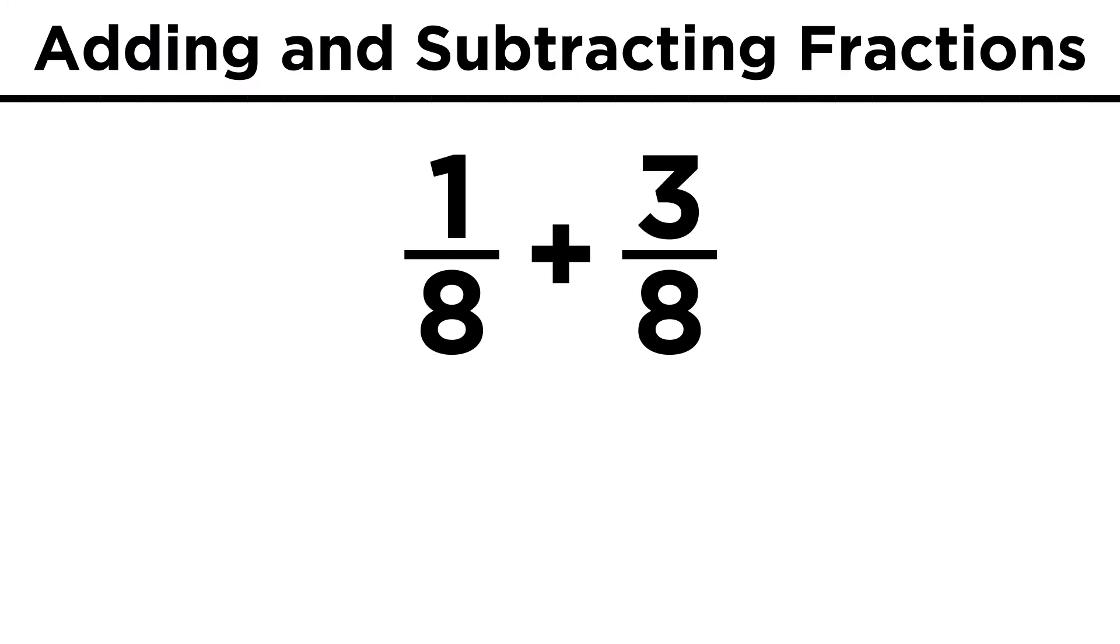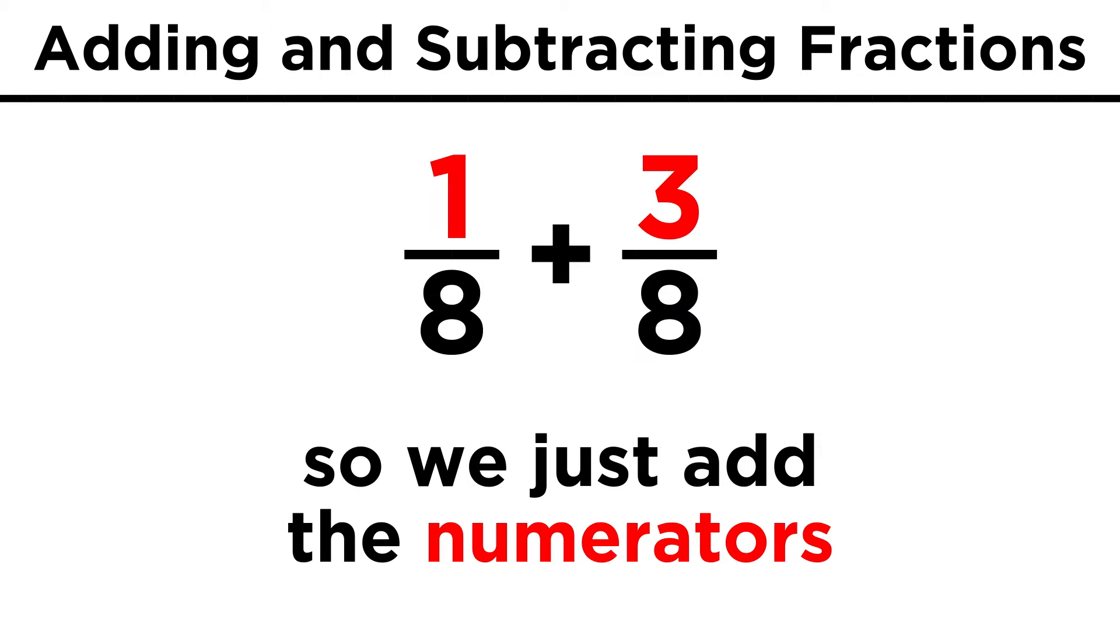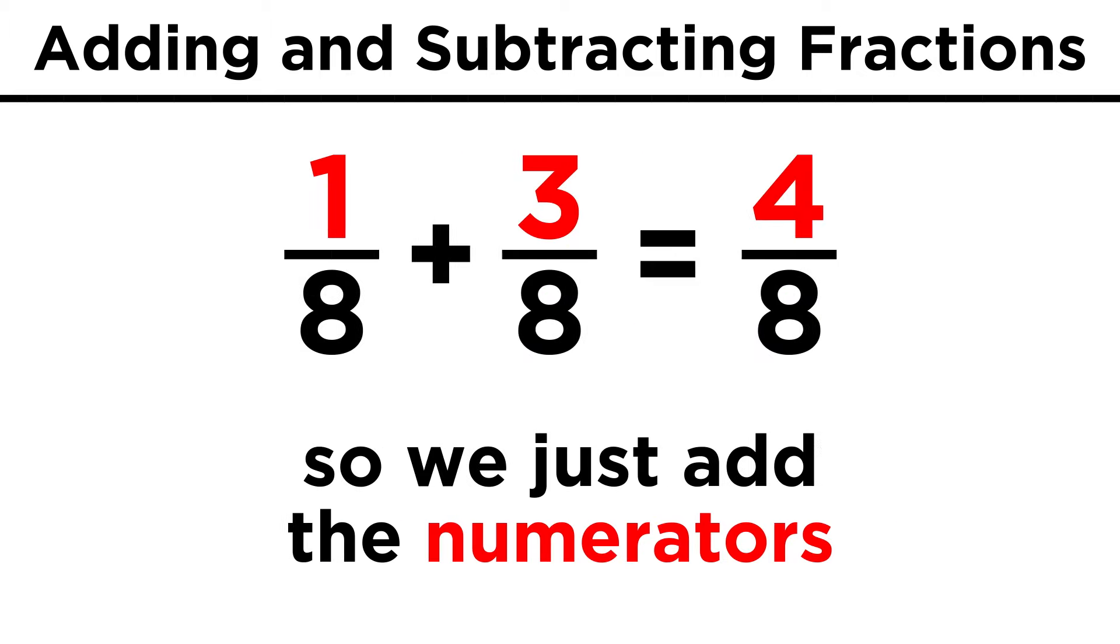First, let's look at these two fractions, one eighth and three eighths. Because these already have the same denominator, all we have to do is add the numerators. One plus three is four, so we get four eighths.